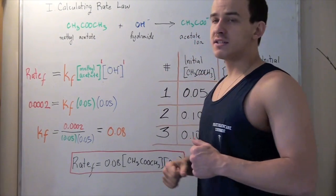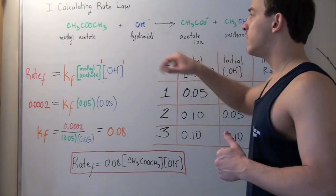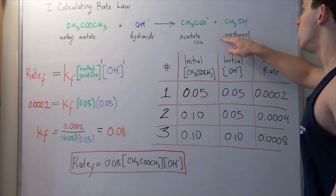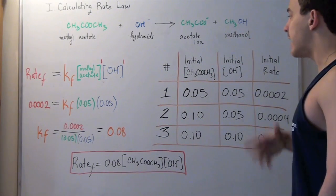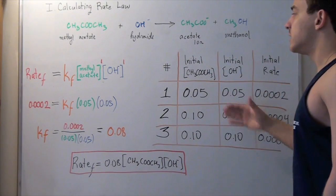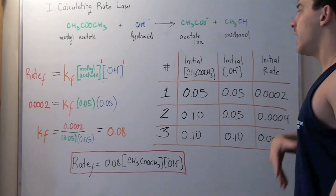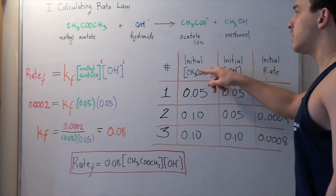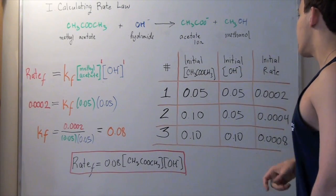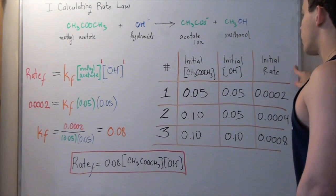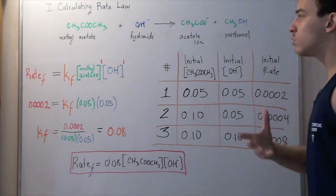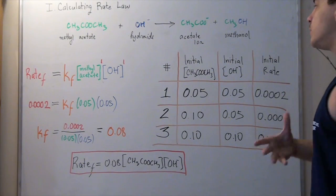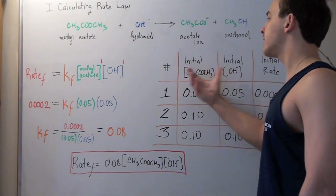One mole of methyl acetate reacts with one mole of hydroxide to produce one mole of acetate ion and one mole of methanol. We'll conduct three experiments in which we measure the concentration of methyl acetate and hydroxide and find the initial rate. Our goal is to see how our initial rate changes when we change our concentration of reactants.